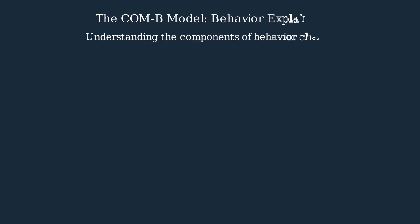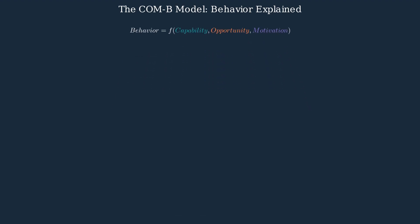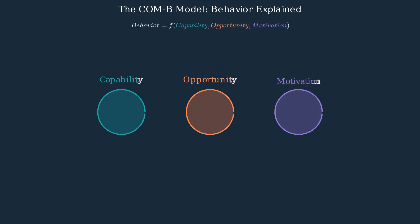The COM-B model is at the heart of the behavior change wheel framework. This model proposes that behavior is a function of three essential components: capability, opportunity, and motivation. These three components interact to influence behavior change.